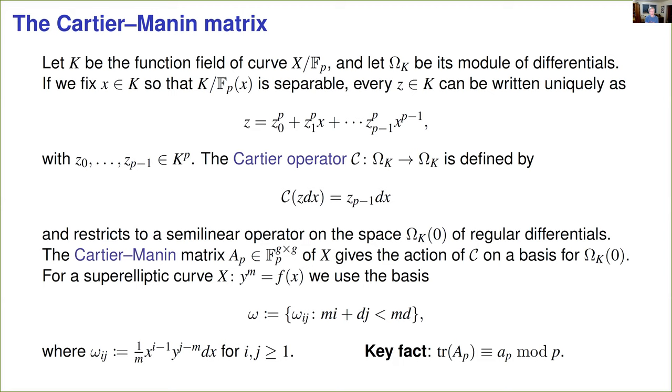And this yields a semi-linear operator on the module of differentials, and it restricts to an operator on the space of regular differentials. This is a g-dimensional vector space over fp. So if we compute the action of this operator with respect to a chosen basis of regular differentials, we get a g by g matrix with entries in fp. And the trace of this matrix is congruent mod p to the trace of Frobenius. Now in order to actually compute it, we need to pick a basis, but it doesn't matter which basis we pick, we're still going to get the same trace, and there's a natural choice of basis for superelliptic curves.